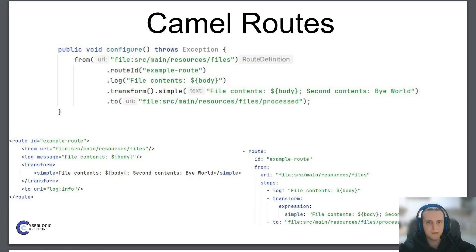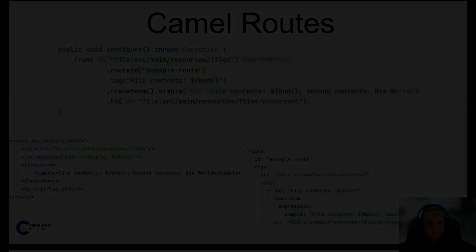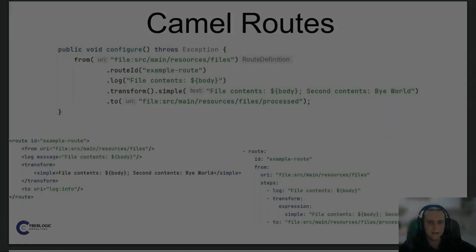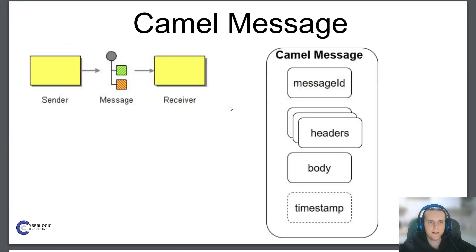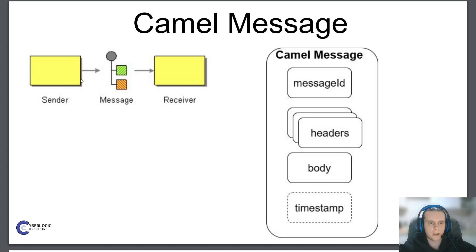Let's continue our overview of Camel architecture. The next architecture elements are message and exchange. Camel works with messages as they flow through Camel routes. Messages are data records used by different systems to communicate with each other. A Camel message is an abstraction that can represent a JMS or Kafka message, an HTTP request, or a file in a file system.